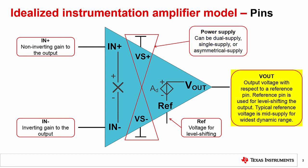The VOUT pin is the output of the amplifier. It is important to note that this output pin is with respect to a reference pin, labeled REF. The REF pin is used to level shift the output of the amplifier. A typical reference voltage for level shifting is mid-supply, as this provides the widest dynamic range. For the rest of this presentation, REF will be set to ground so the output will not be level shifted.